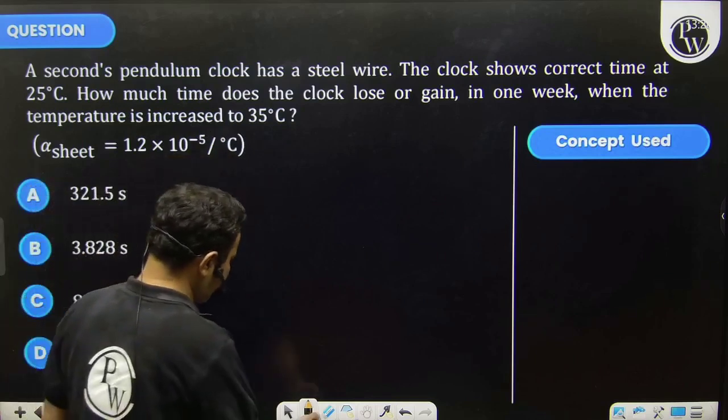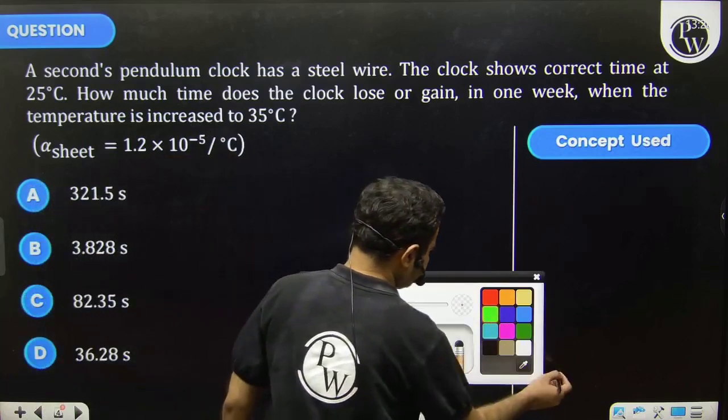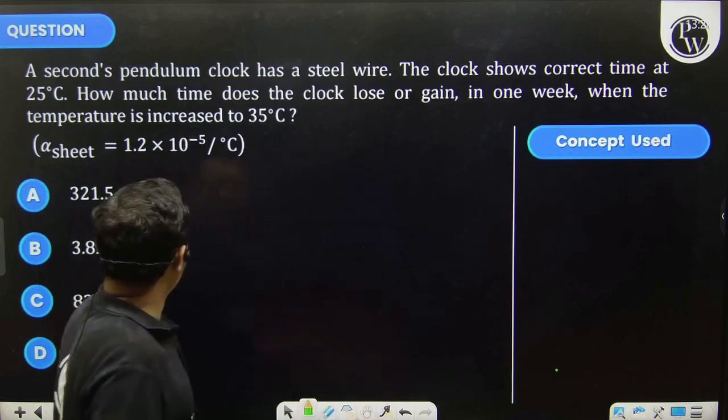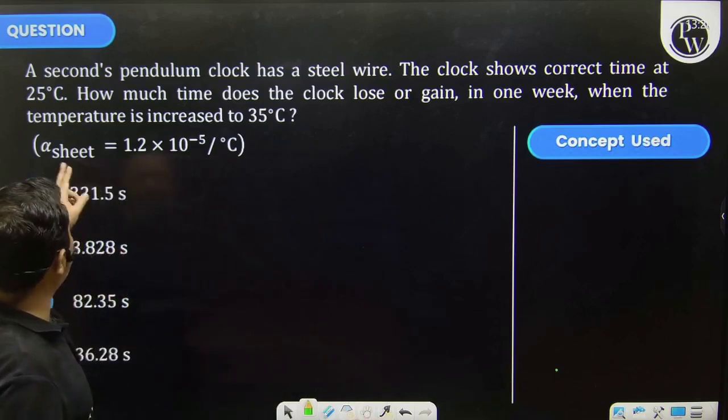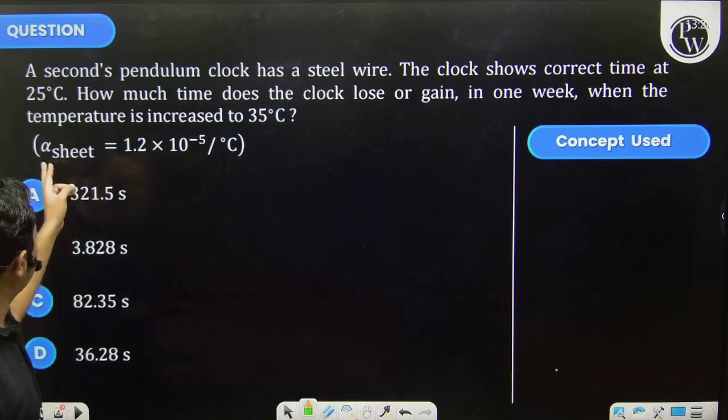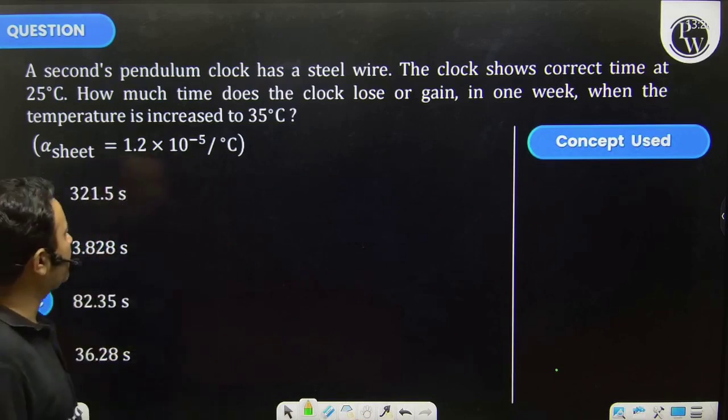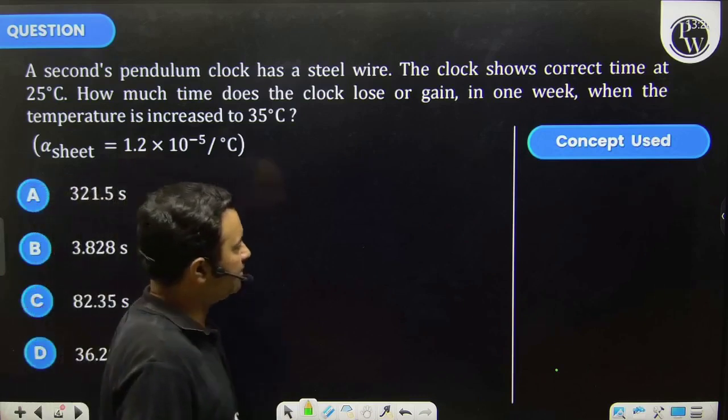35°C? Alpha of steel is 1.2 × 10⁻⁵ per °C.